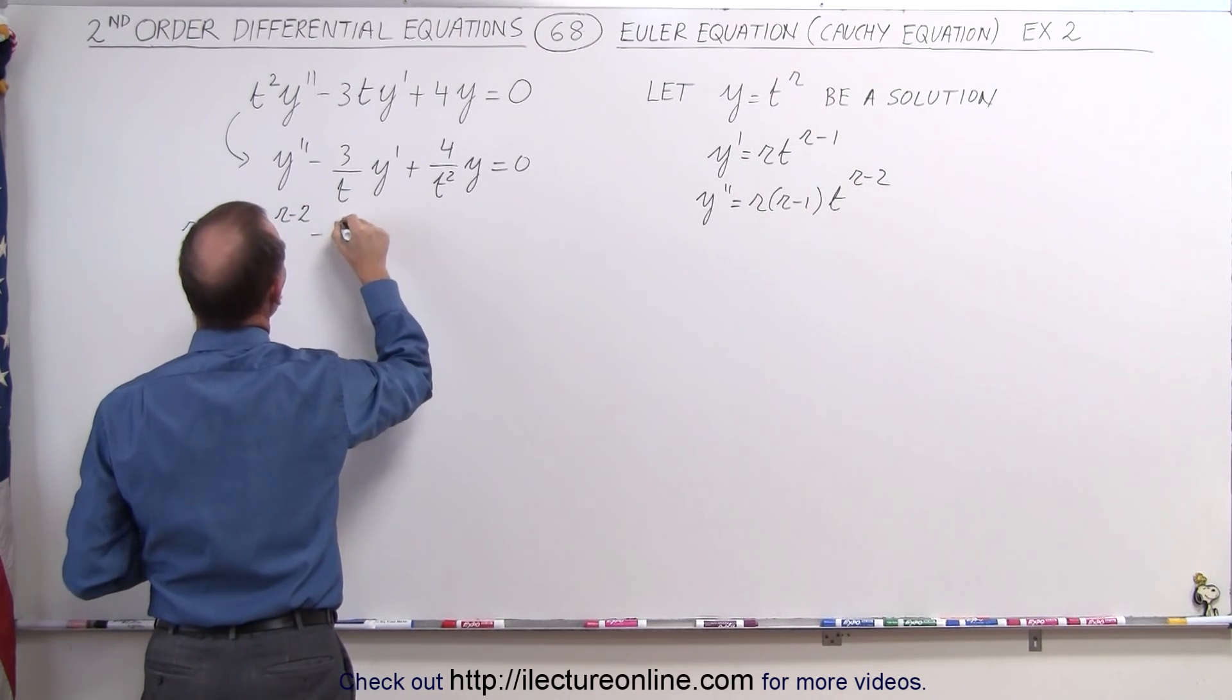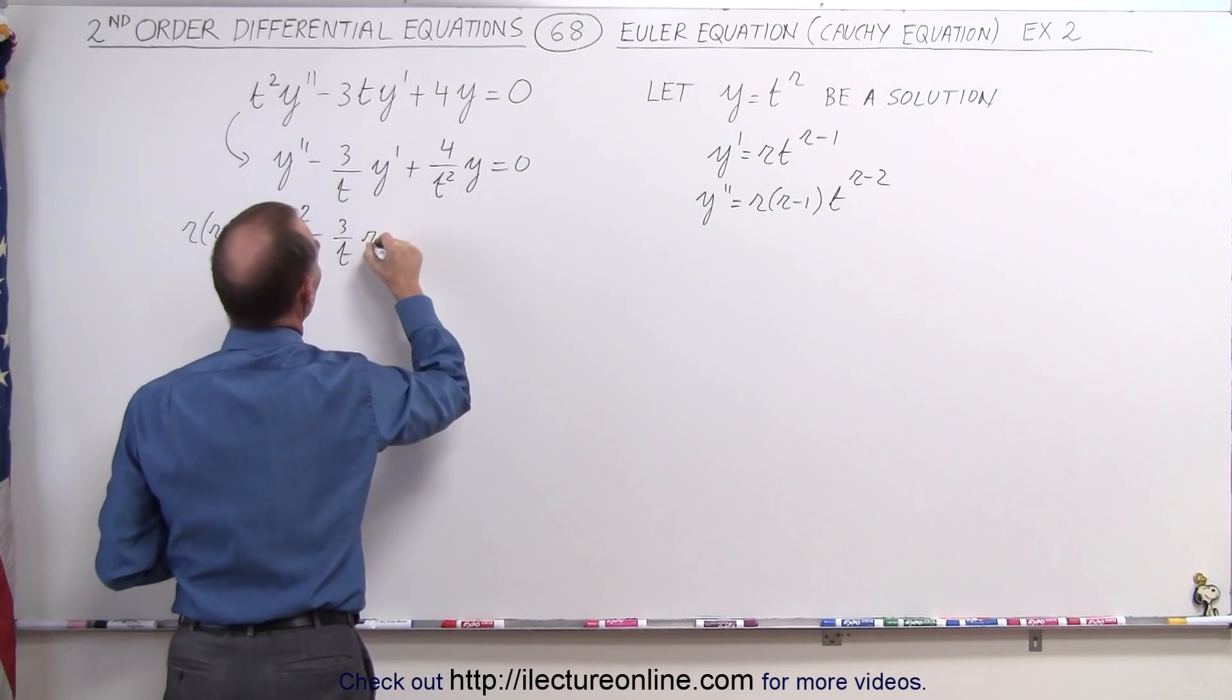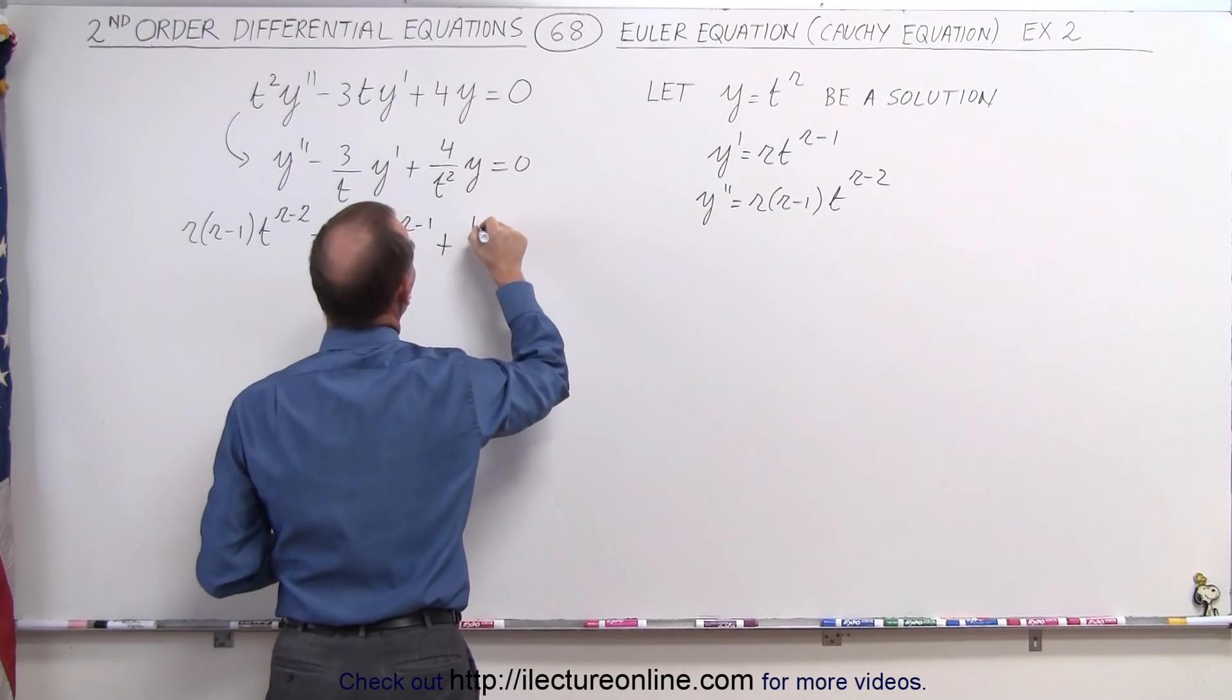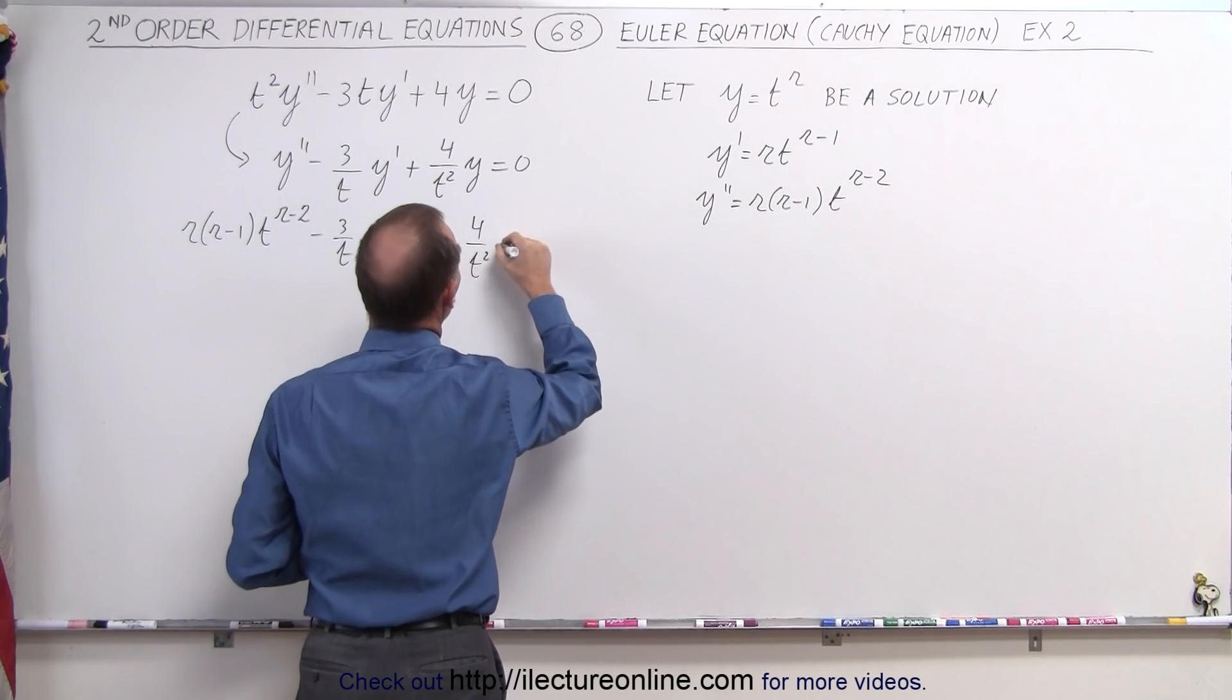Then we have -3/t y', which equals r·t^(r-1), plus 4/t² times y, which is t^r.